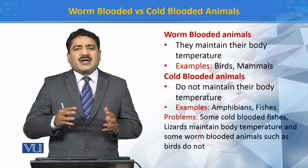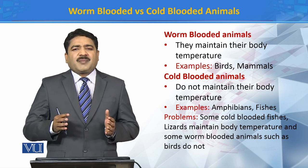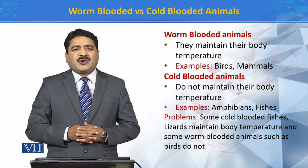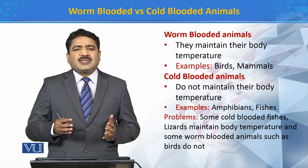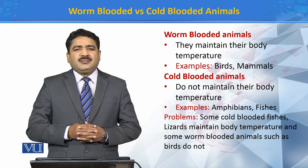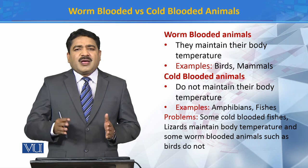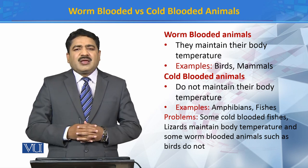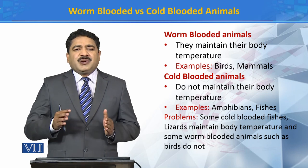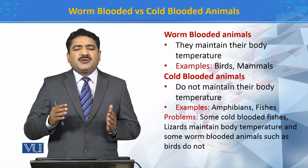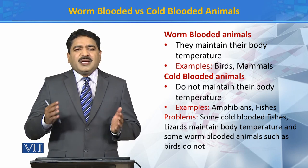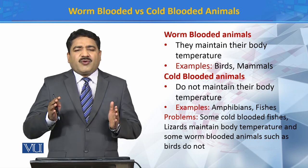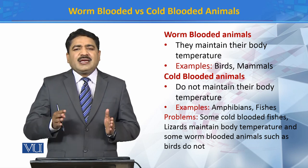If we talk about humans and their body temperature, humans have their body temperature fixed. For example, our body temperature is 37 degrees. Now, if the external environment temperature changes — for example, the external environment is 40 degrees — our body still maintains its temperature.